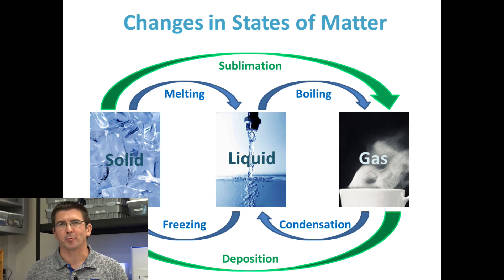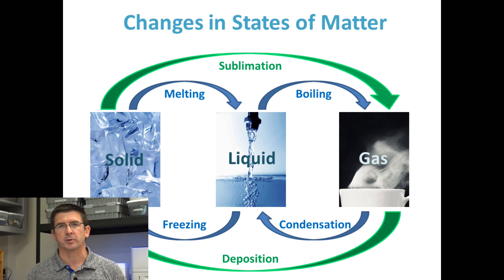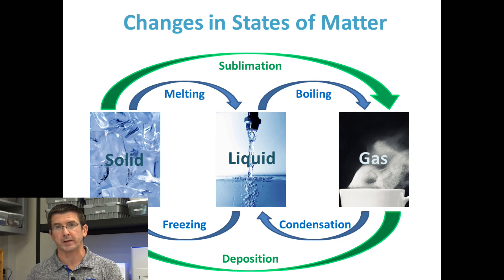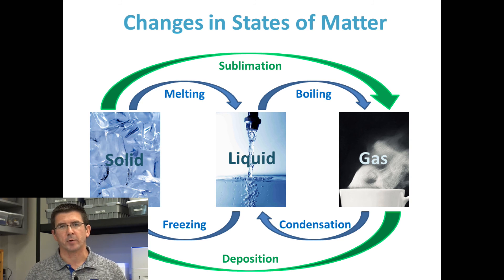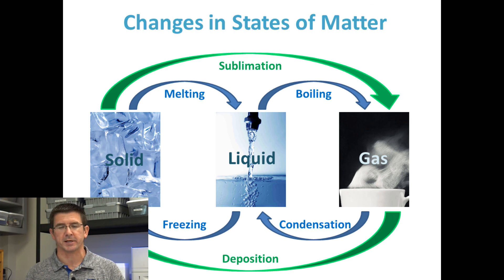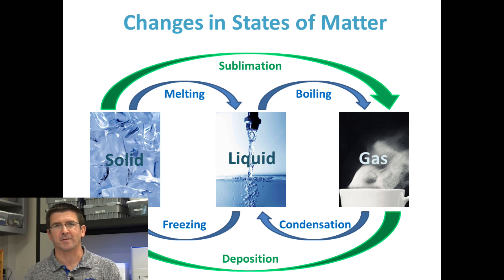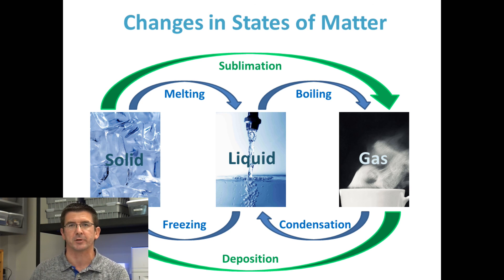A useful chart shows how changes in temperature lead to changes of state. As an object goes from a solid to a liquid, we call that melting. From a liquid to a gas is boiling. From a gas back to a liquid is condensing. From a liquid to a solid is freezing. There are also changes where a substance skips a stage — going directly from a solid to a gas through sublimation, or directly from a gas to a solid through deposition. We'll look at examples of those as we do activities for this unit.